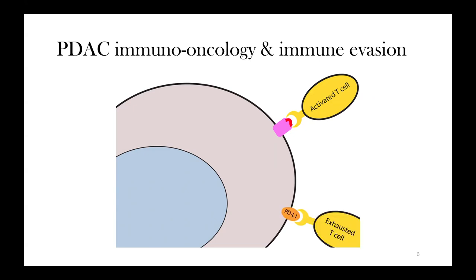One very common way cancer does this is to upregulate PDL1, which essentially causes an exhausted phenotype in T cells, so they stop being able to attack the tumor as they used to, and so the cancer can proliferate more readily.